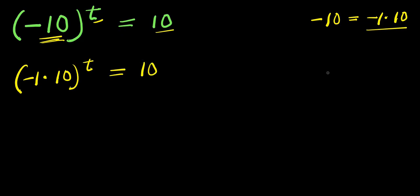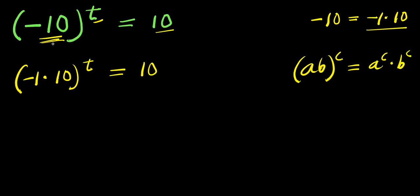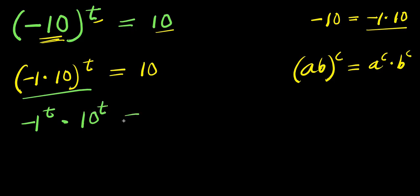Now, if you have this identity — if you have a times b raised to the power of c, this equals a to the power of c times b to the power of c. So what I'm going to have here will be negative 1 to the power of t times 10 to the power of t, and this equals 10.